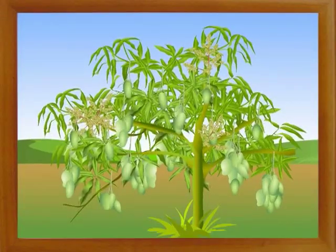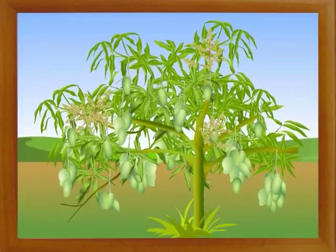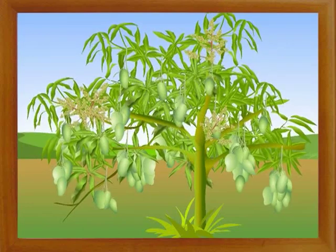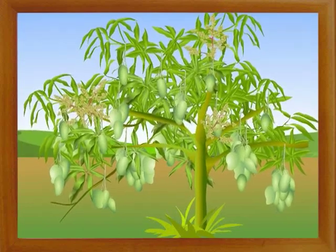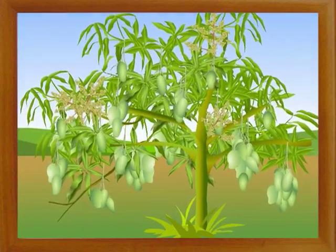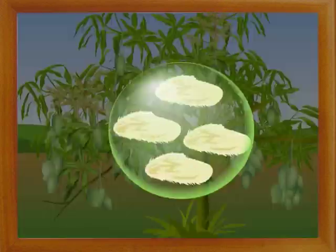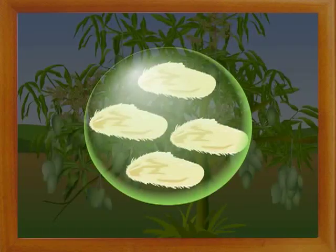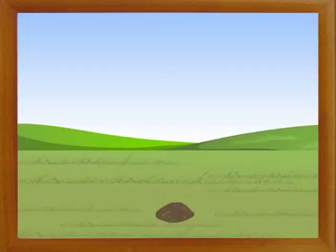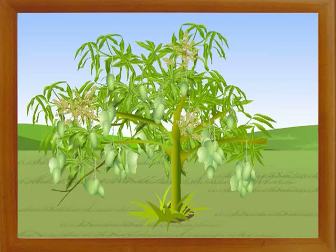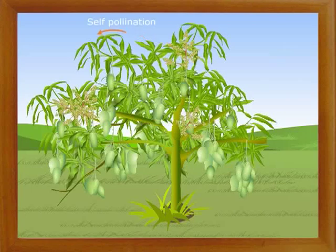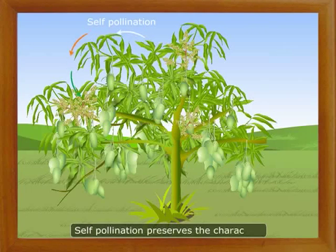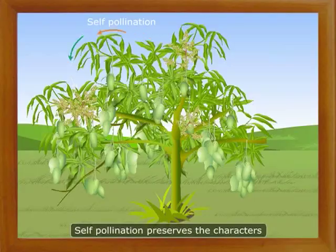In pure line selection, from a field of crop, a single plant with the most desirable characters is selected and its seeds preserved. These seeds are sown and this plant variety is propagated for some generations by self-pollination. Self-pollination preserves the characters.